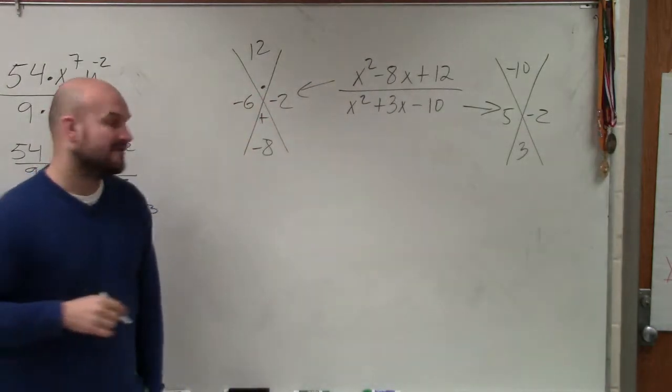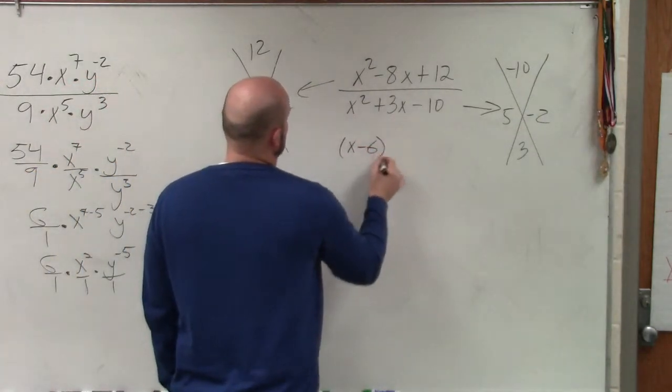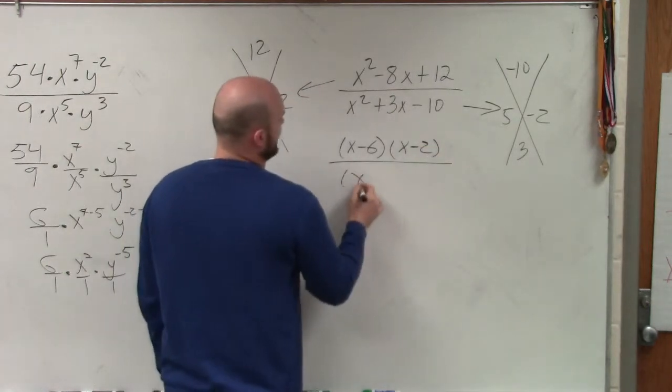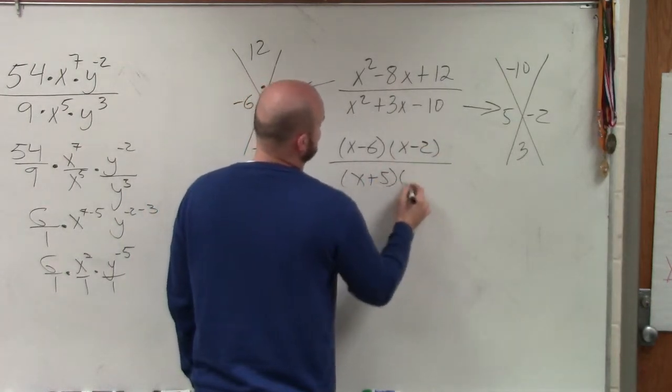So therefore, when I write the factored form here, I have x minus 6 times x minus 2 all over x plus 5 times x minus 2.